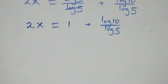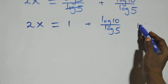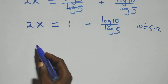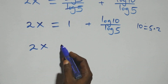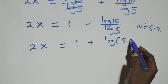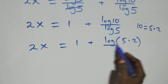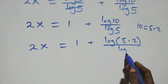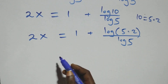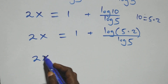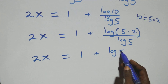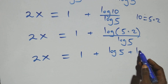We can also express 10 as 5 times 2, so what we have becomes 2x equals 1 plus log of 5 times 2, over log 5. Applying the log product rule again, this gives us 2x equals 1 plus log 5 plus log 2, all over log 5.